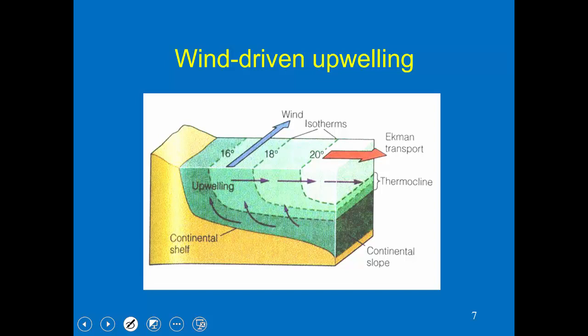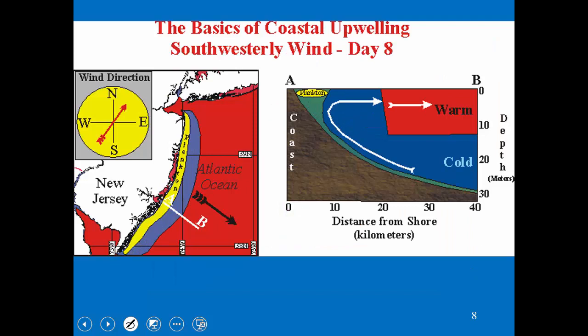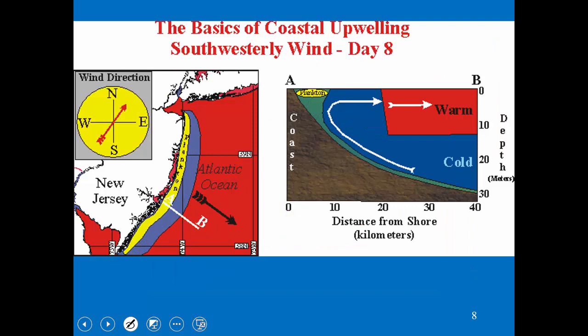Upwelling — hopefully some of this is a review — on the east coast, a wind from south to north will cause water to move offshore via Ekman transport. That will bring up upwelled water that's colder and nutrient-rich from deeper waters. That's basically wind-driven upwelling on our coast. Here's a diagram illustrating what's happening when we have a wind going from the southwest to the northeast off our coast.